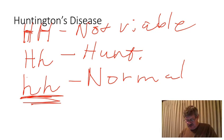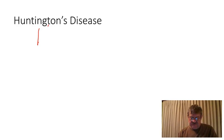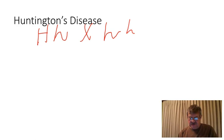Let's look at the genetics of this. We have one individual that has Huntington's disease and is heterozygous, and the other individual — since it's only one in 20,000 — odds are the other individual is going to be normal and is not going to have Huntington's disease.